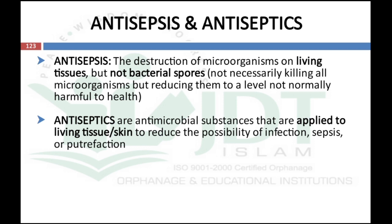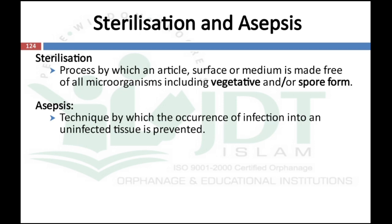Antiseptics are agents applied to living tissue or skin to reduce the possibility of infection, sepsis, or putrefaction. Comparing disinfection with sterilization: sterilization is defined as a process by which an article, surface, or media is made free of all microorganisms including vegetative and spore forms. In disinfection there is no killing of spore-forming microorganisms — they are reduced to a level no longer harmful. But sterilization kills all microorganisms including spores.